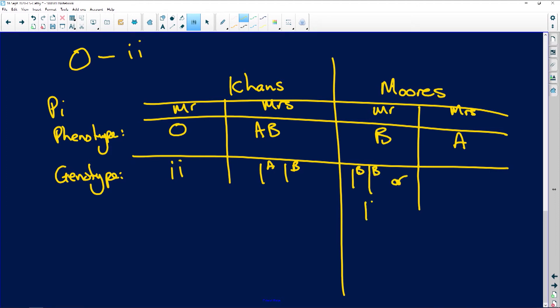Or he can be IB i. And Mrs. Muir is A so she can be IA IA or she can be IA i. So homozygous A or heterozygous. Homozygous B or heterozygous. Mrs. Khan can only be IA IB. And Mr. Khan can only be little i and little i.